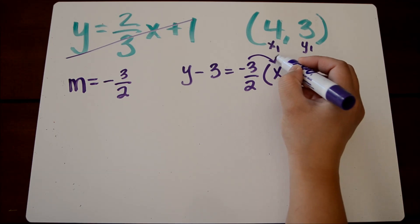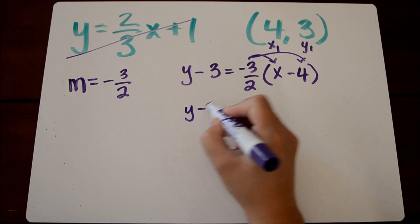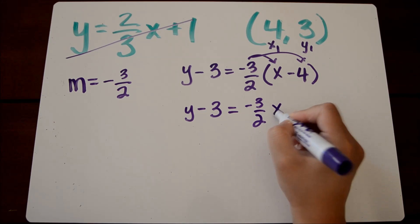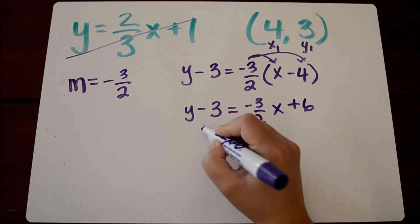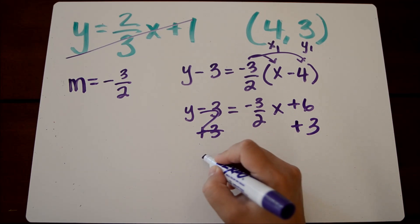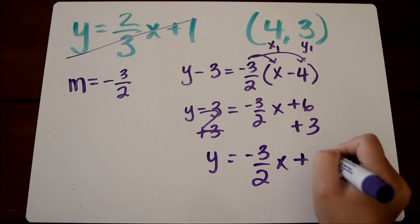But if we're asked to write it in slope-intercept form, we're going to have to solve for y. The first step is to distribute. So we're going to distribute negative three-halves, we get negative three-halves x plus six. And to get rid of the constant, we use inverse operations, and we get y equals negative three over two x plus nine.